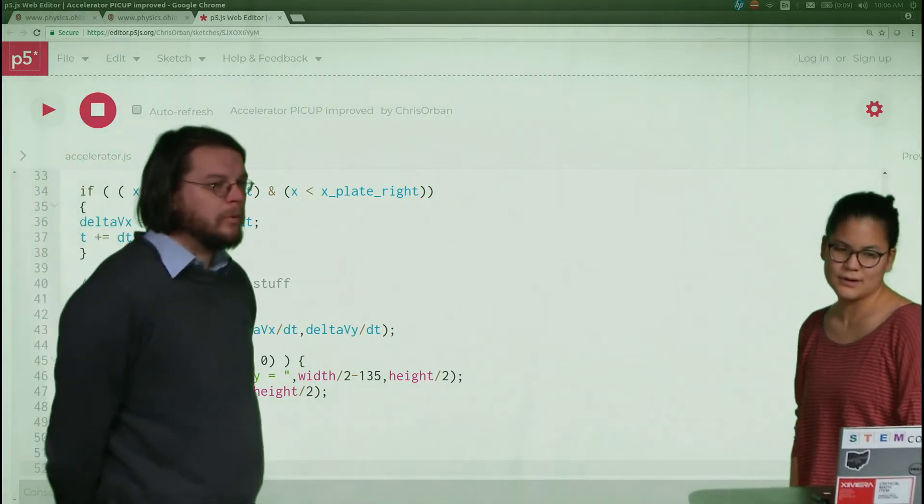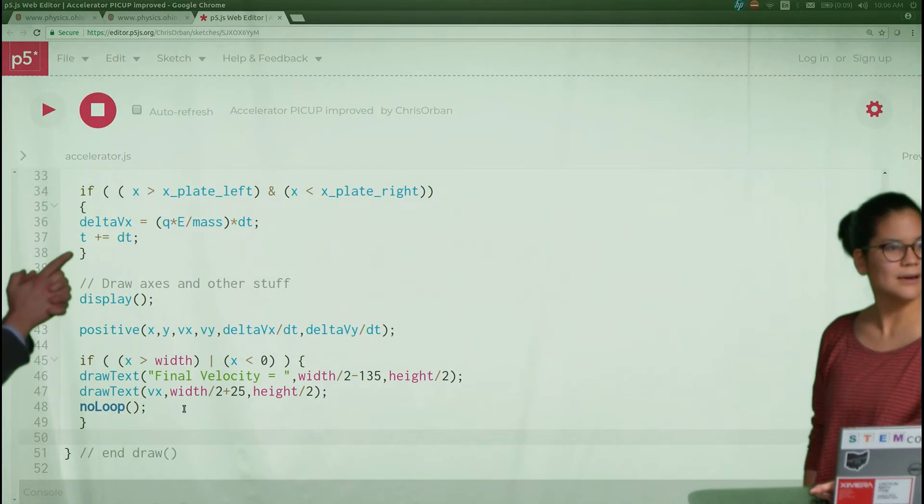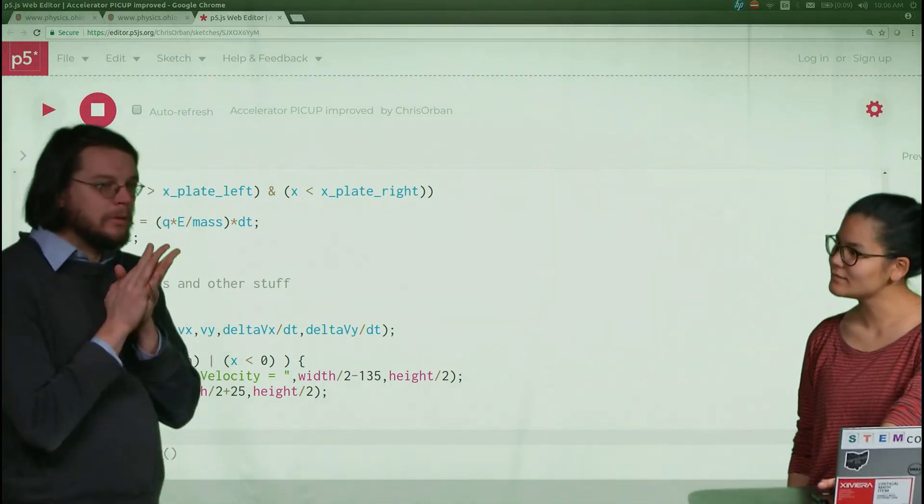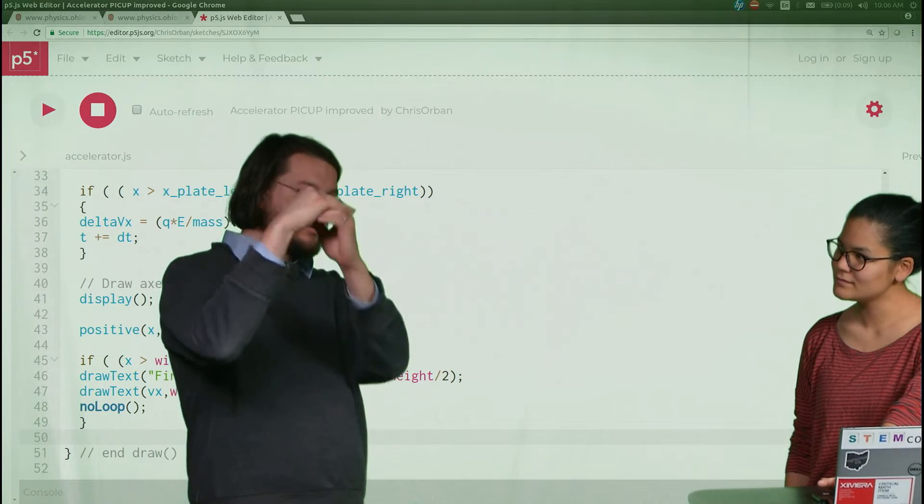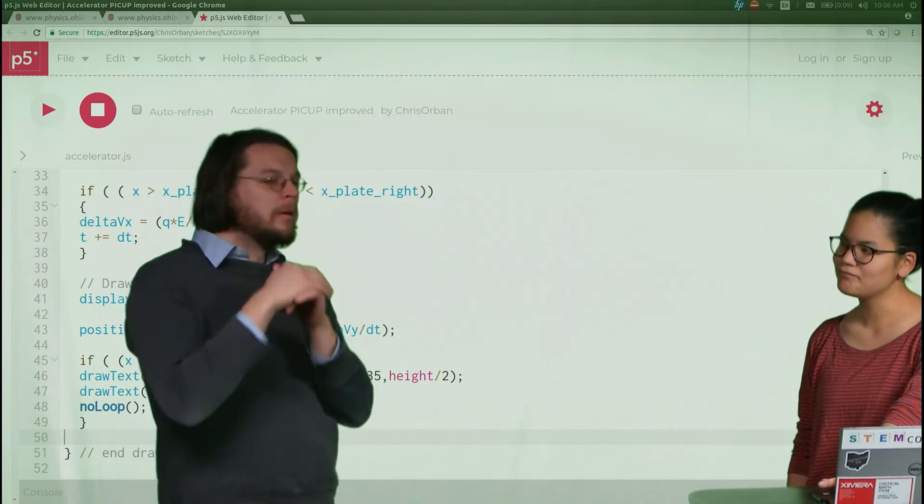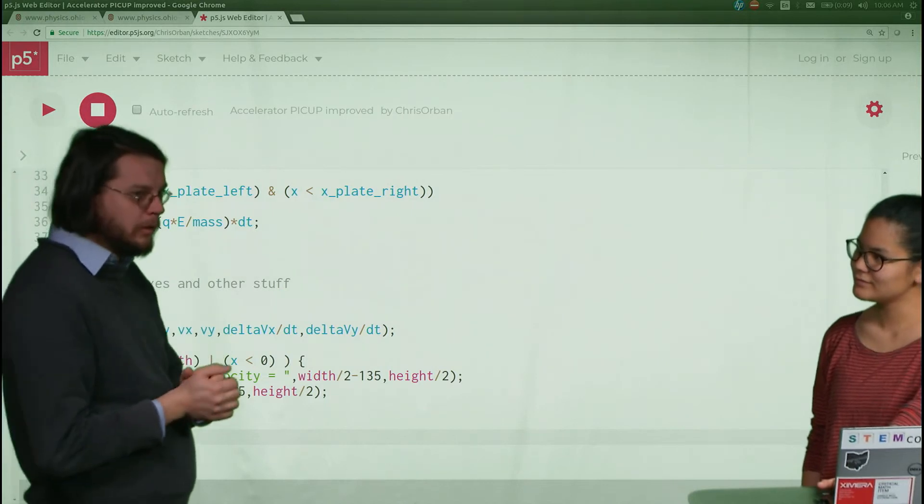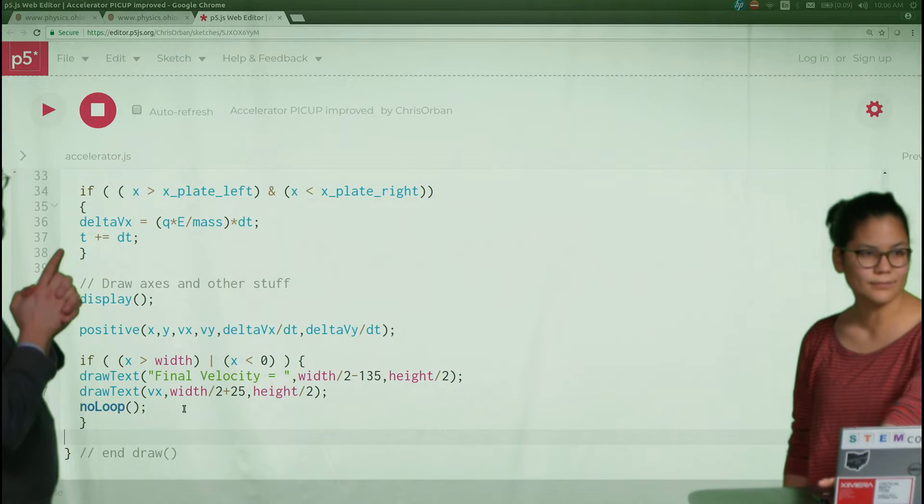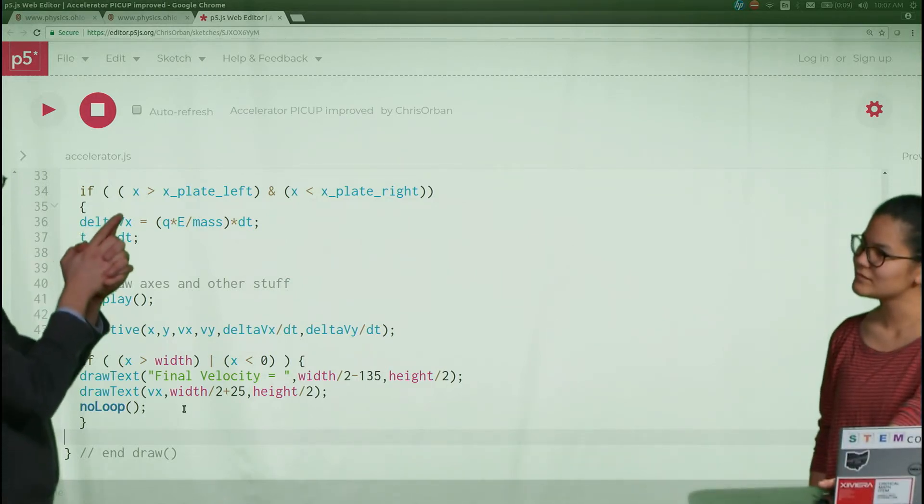One thing I want to point out is this time variable. You see t plus equals delta t. At the beginning of the program it says t equals zero, so at the very beginning zero time has elapsed. But then every time that we run the draw function, which runs 60 times a second, we're gonna increment this time and it gets larger and larger. But only if what?